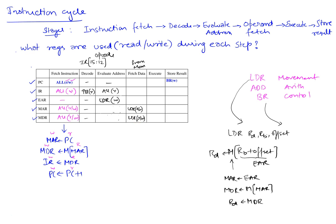Execute doesn't change any of these registers for LDR. But during store result, the destination register gets written to by taking the contents of MDR. So MDR is read here during store result for LDR, and its contents are copied into the destination register.